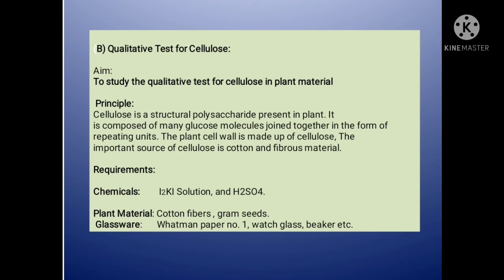Principle: Cellulose is a structural polysaccharide present in plants. It is composed of many glucose molecules joined together in the form of repeating units. The plant cellulose is made up of cellulose. The important source of cellulose is cotton and fibrous material.